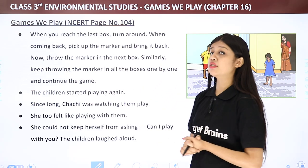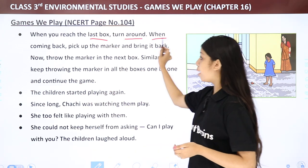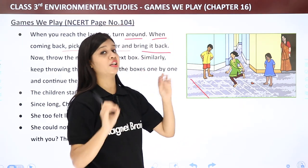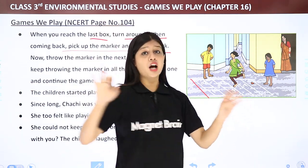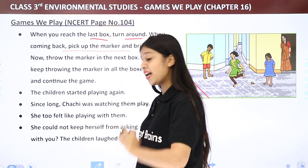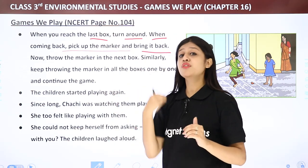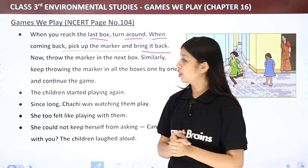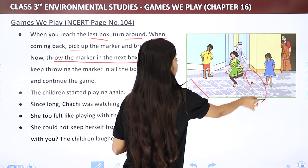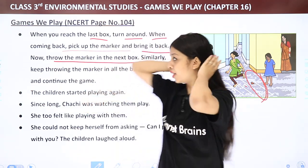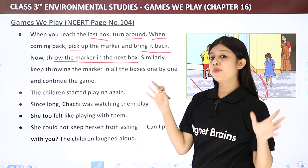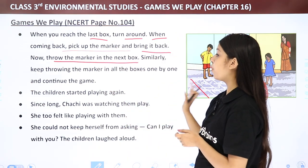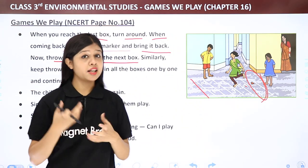When you reach the last box at 7-8, you turn around and continue the game coming back. While coming back, you must pick up the marker and bring it with you. Once you complete that round, you throw the marker into the next box and keep going through all the boxes one by one.